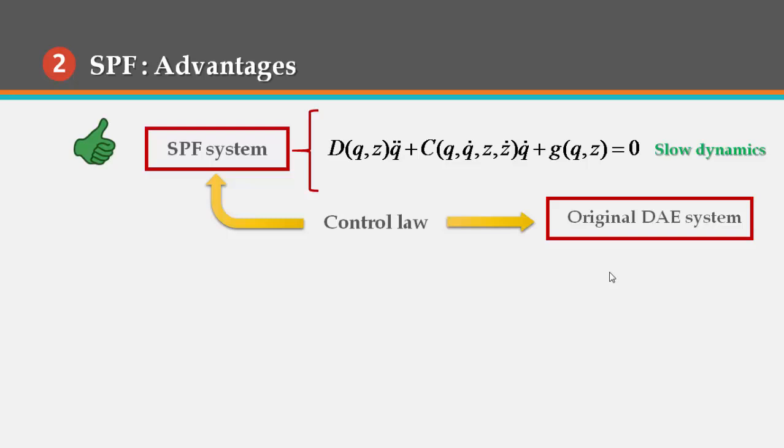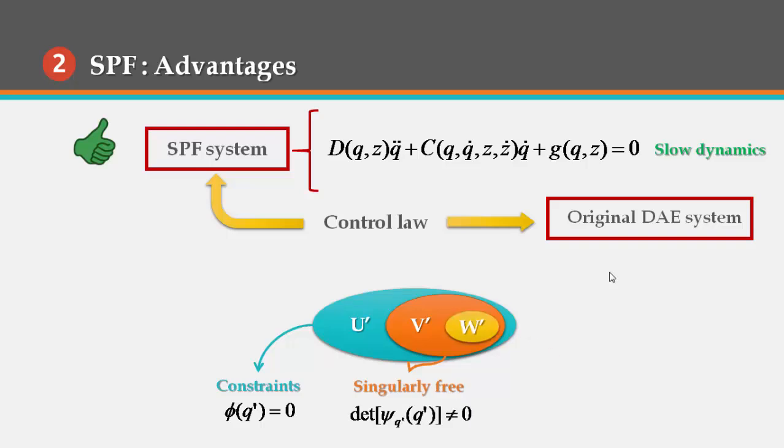Recall that U is the domain satisfying constraints, V is the non-singular domain, and W is the largest subset of V for which the parameterization holds true.